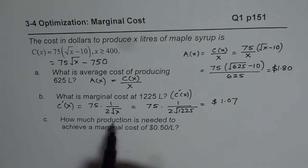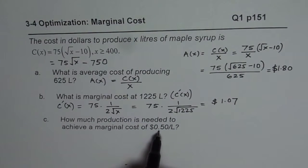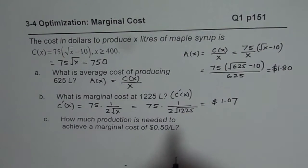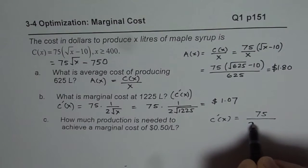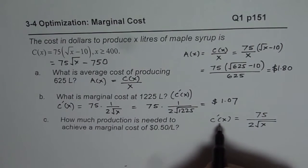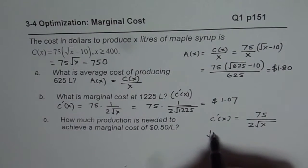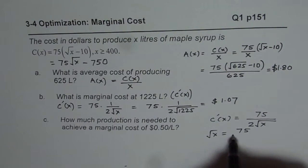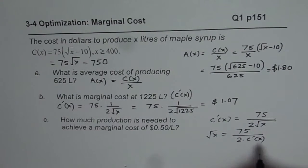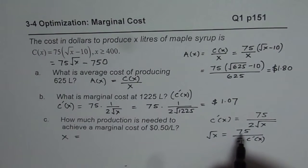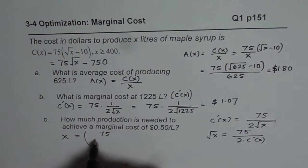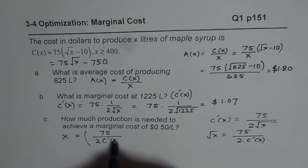Part C: how much production is needed to achieve a marginal cost of 50 cents per liter? We are given the marginal cost, so we use the same formula: marginal cost C prime of x equals 75 divided by 2 square root of x. Here we are given C prime of x and need to find x. Rearranging, square root of x equals 75 divided by 2 times C prime of x, so x equals the square of that quantity.